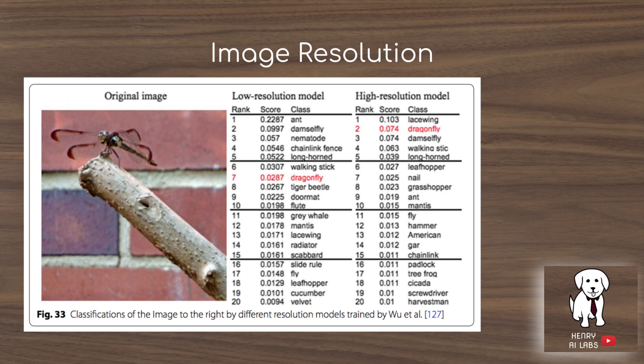Another interesting factor is the impact of image resolution on model performance. Frequently, images are downsized to fit as input and save computation, but this study shows that preserving high resolution tends to yield better classification performance.